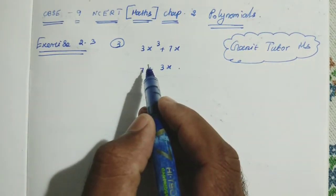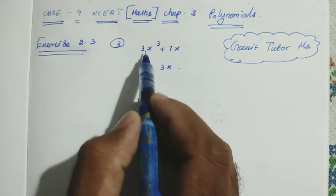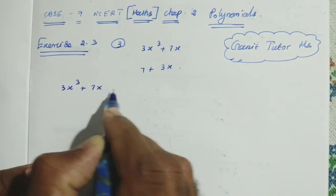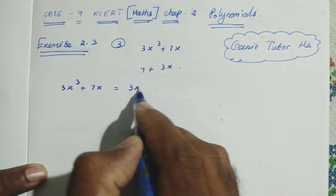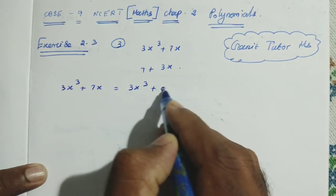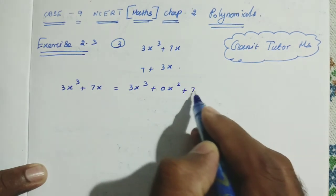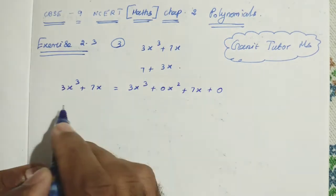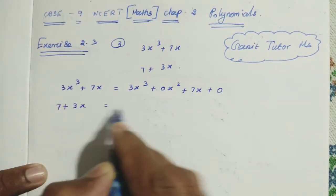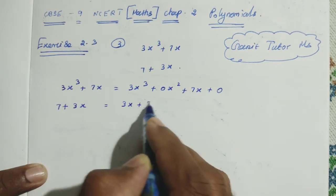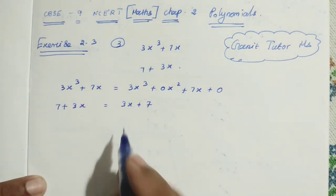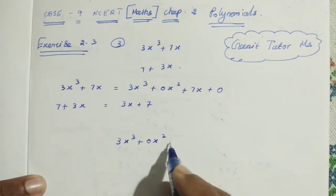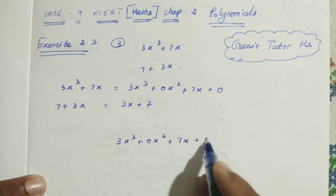Before we enter the division, we should check whether the polynomial is in standard form or not. Here it is not in standard form. So we write 3x cubed plus 7x in standard form as: 3x cubed plus 0x squared plus 7x plus 0. Also, 7 plus 3x can be rewritten as 3x plus 7. Both are the same.